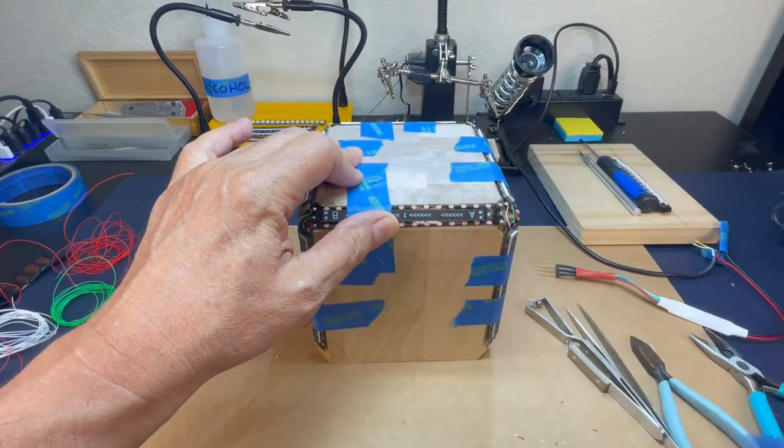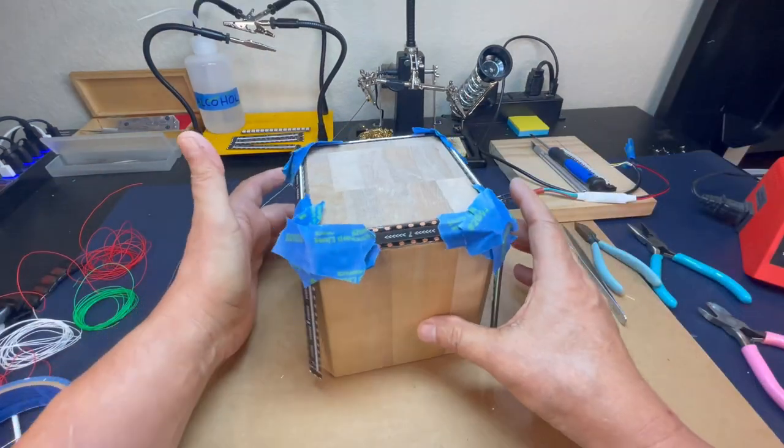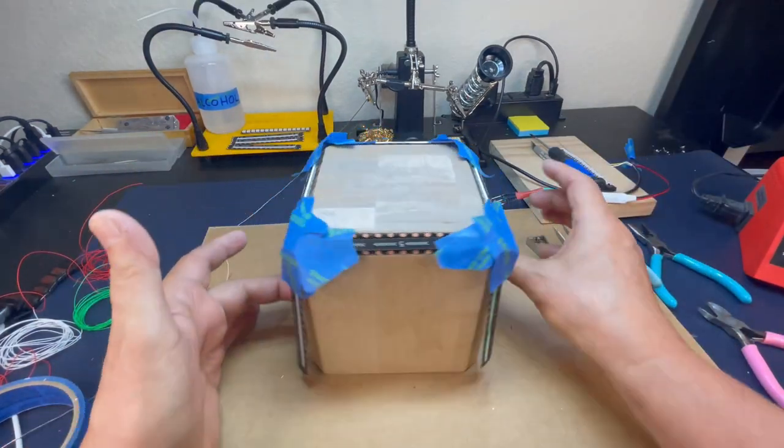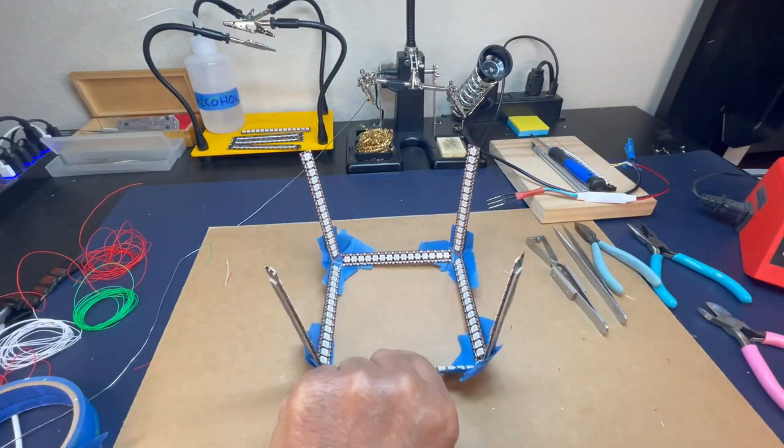I now remove the blue tape from the jig to release the LEDs. I reinforce each corner with blue tape to keep the structure from collapsing. I remove the LEDs and place them on the table and I put aside the cube jig.